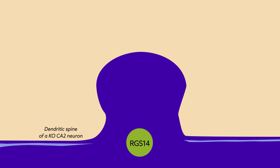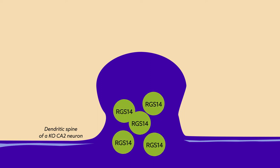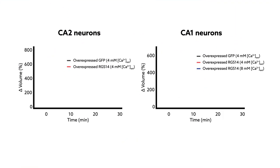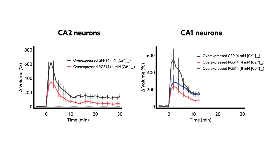To further investigate whether RGS14 reduces the capacity for spine plasticity, the team overexpressed the protein in sliced cultures prepared from the knockout mice. The overexpression significantly blocked the induction of spine plasticity in both CA2 and CA1 neurons.